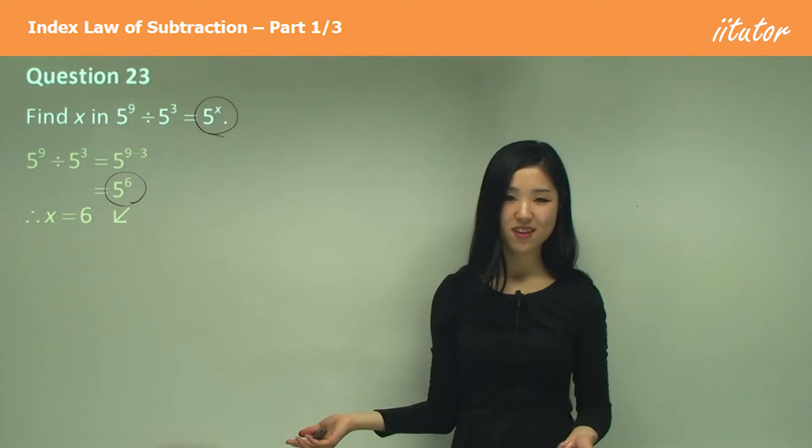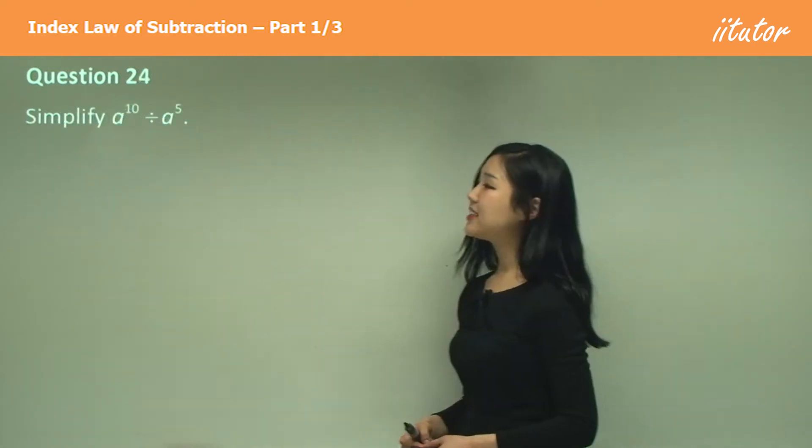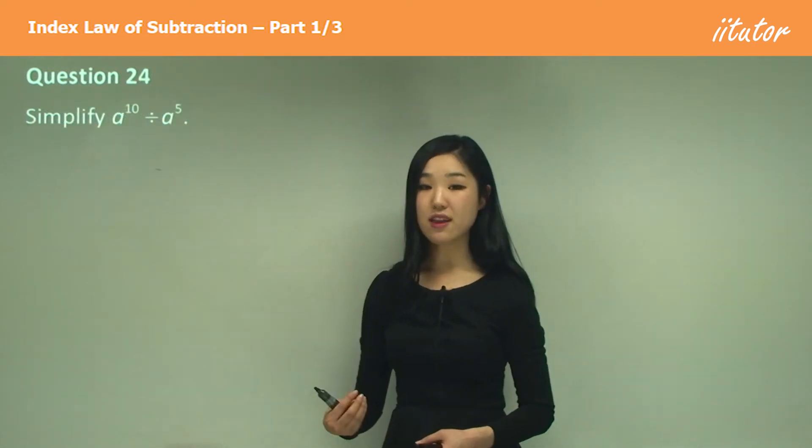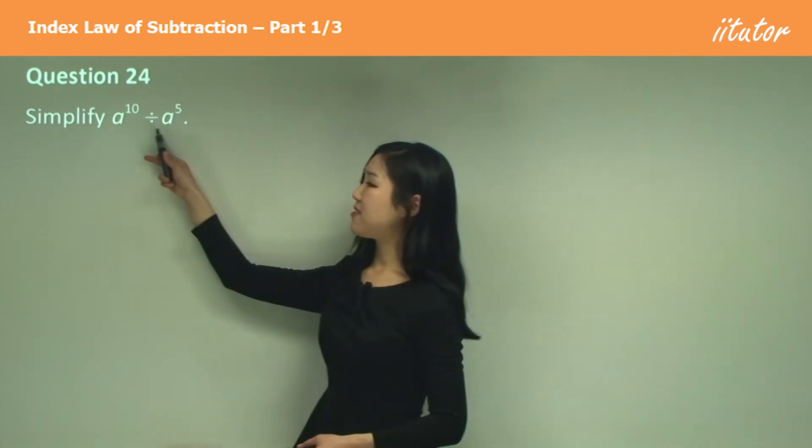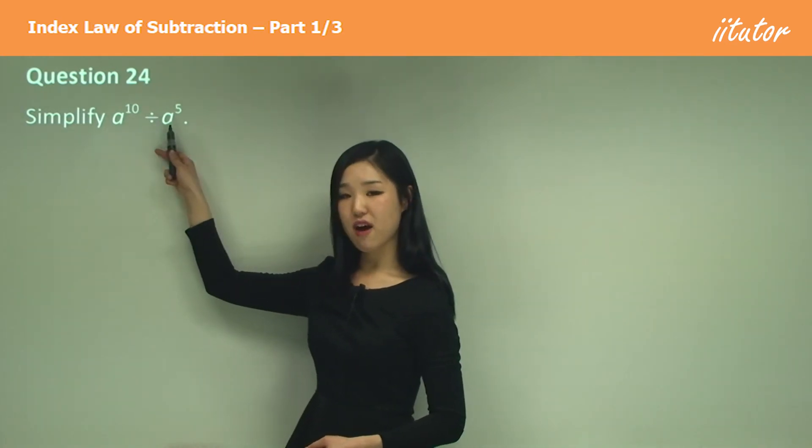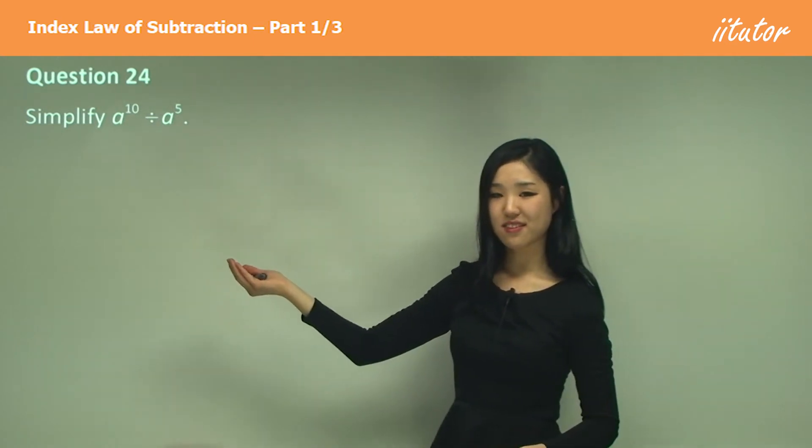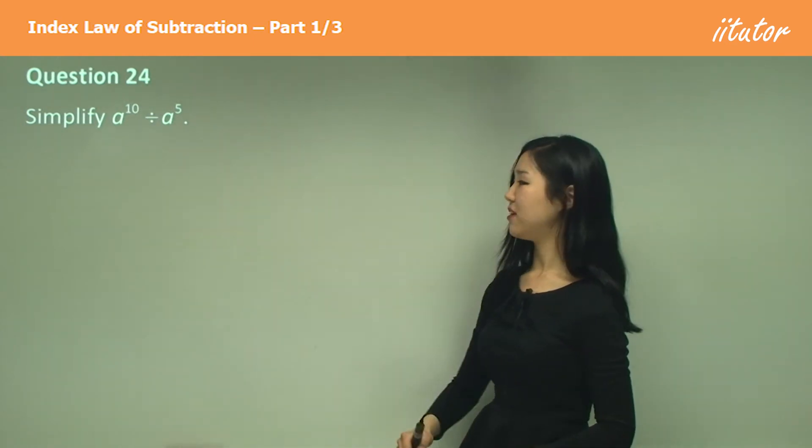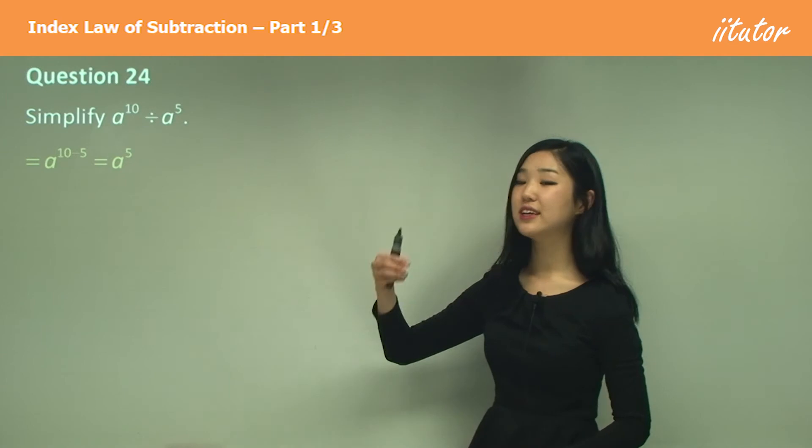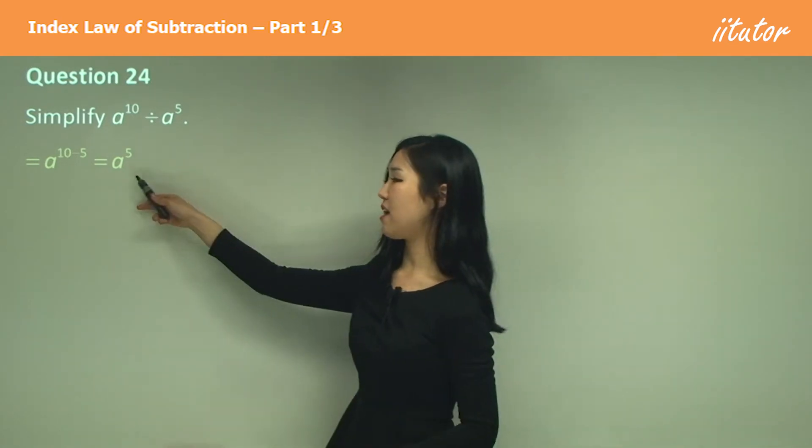Again, just comparing and contrasting the indices. Simplify a to the power of 10 divided by a to the power of 5. We have the same base a and we're dividing. So what do we do with the indices? Just subtract them. We'll have a to the power of 10 minus 5, which is a to the power of 5.